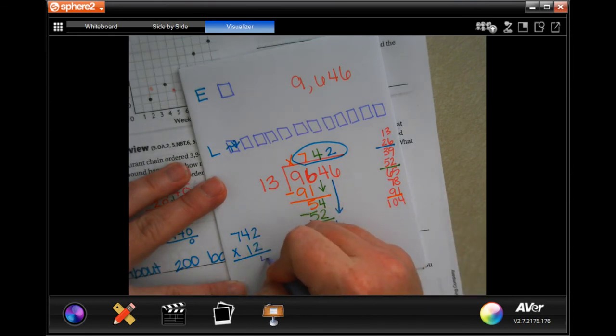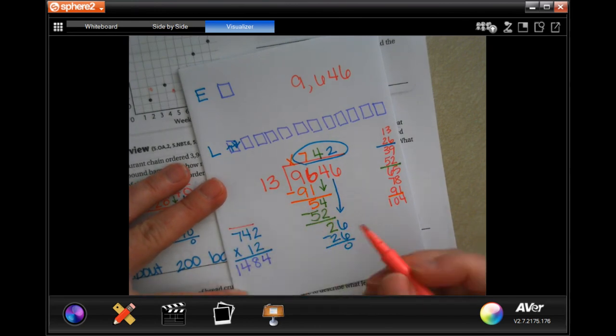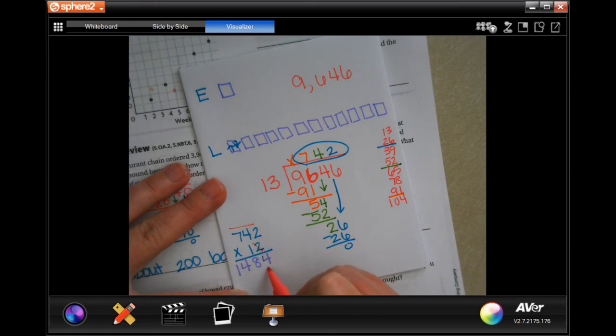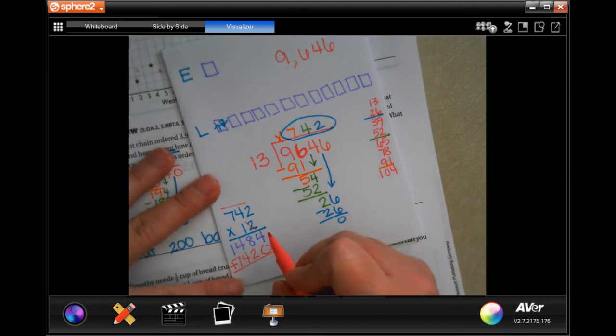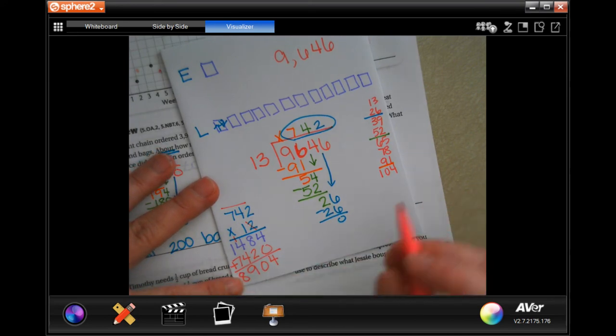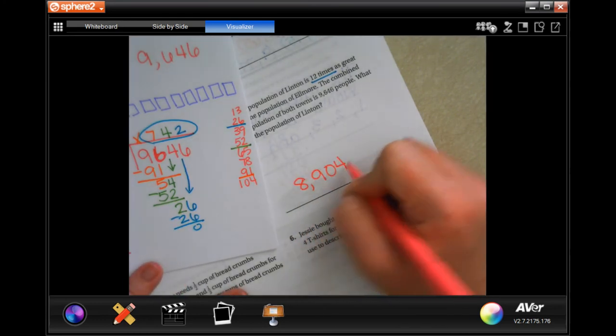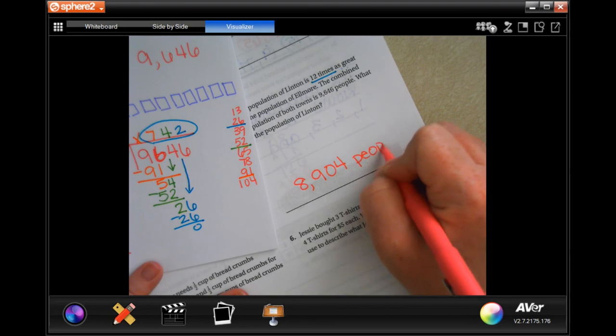All right, kind of sideways on you. So two times two is four, two times four is eight, two times seven is fourteen. We're going to put down the four, carry the one. And then one times 742, so I'm just going to write 742. We're going to add that up. Four, ten, carry the one. One plus four is five, plus four more is nine. And one plus seven is eight. So eight thousand nine hundred and four people.